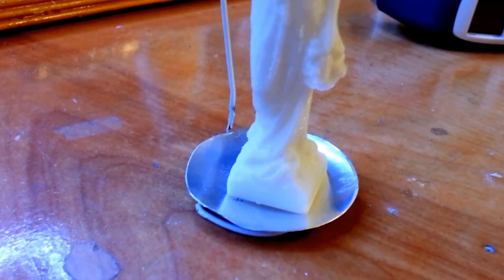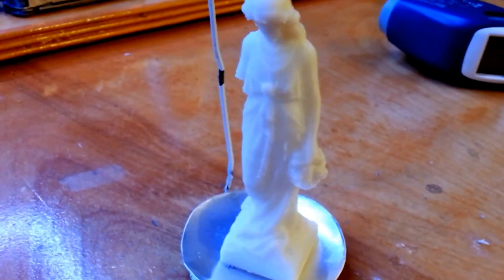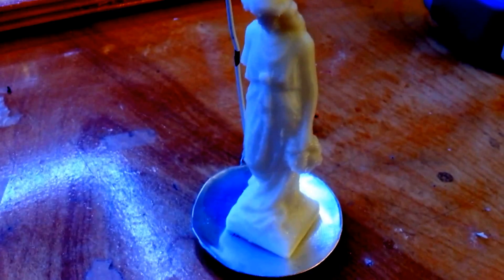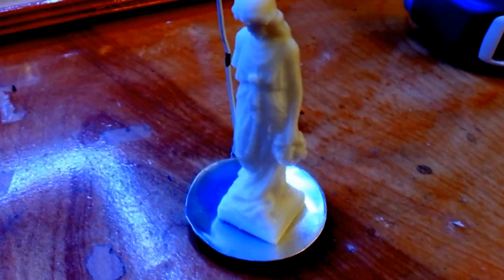Now after the first minute you can see the bottom is a lot shinier now but the top doesn't seem to be affected. This is because the vapor is hanging down close to the bottom of the jar. Let's put it in for another minute.